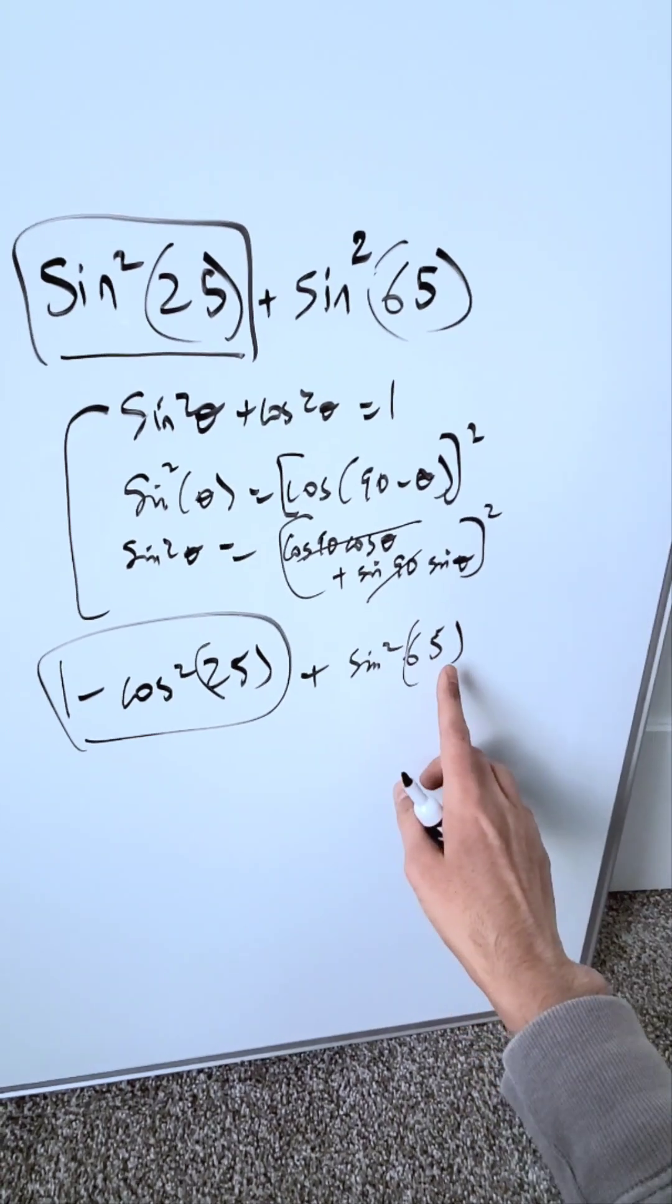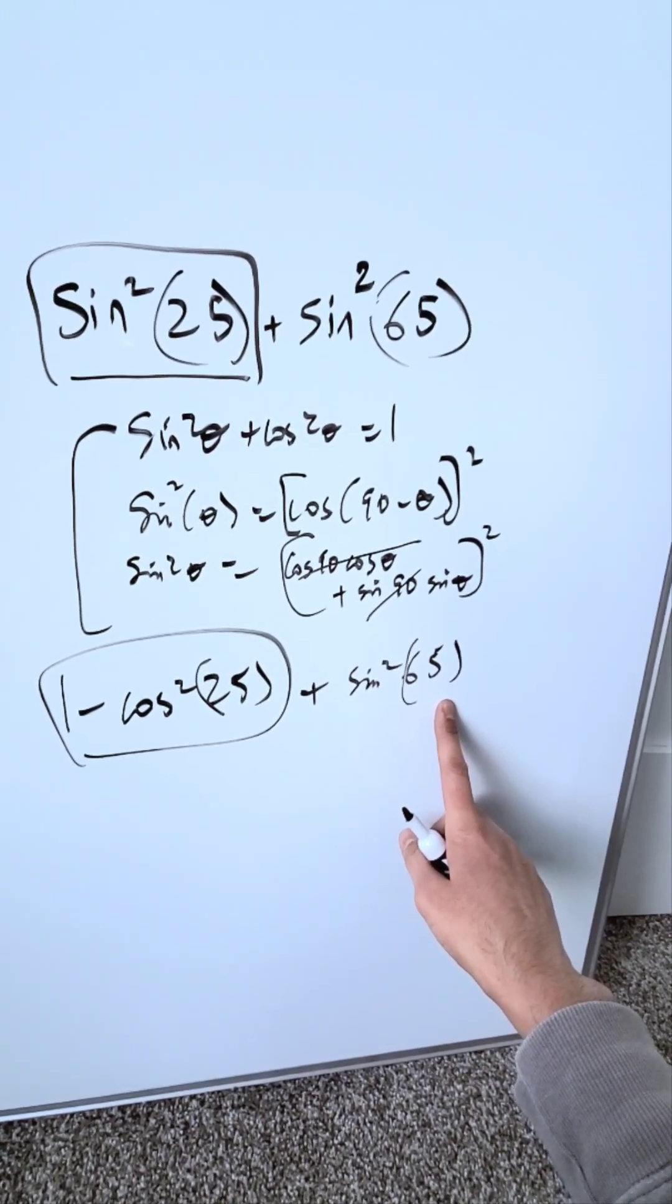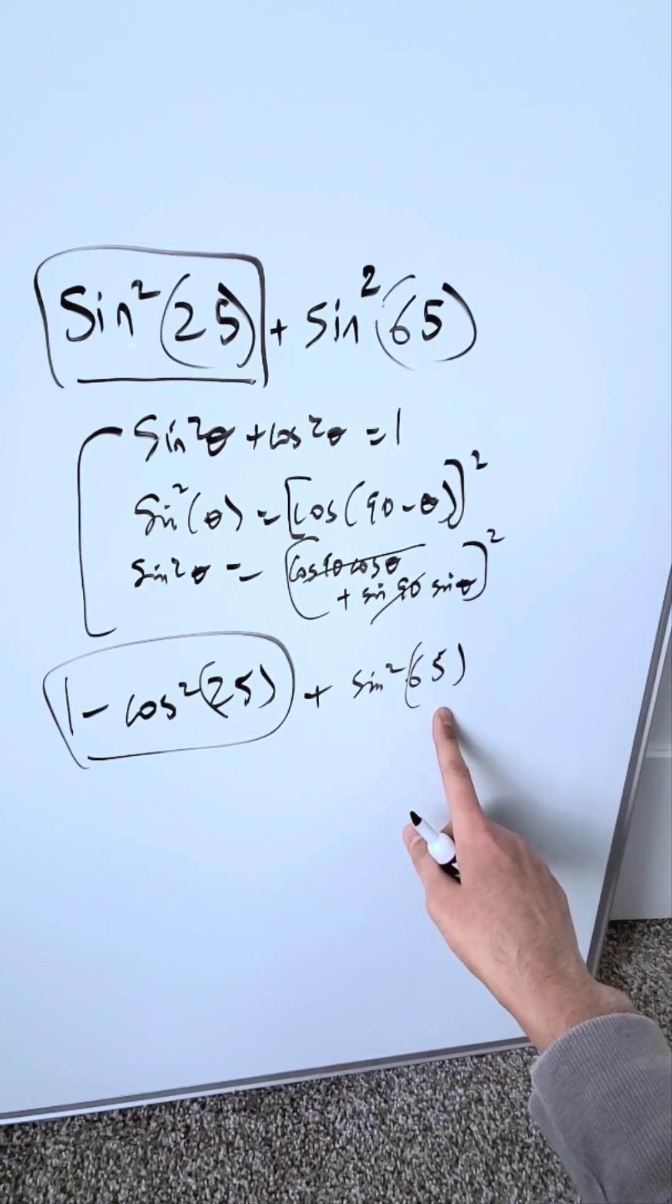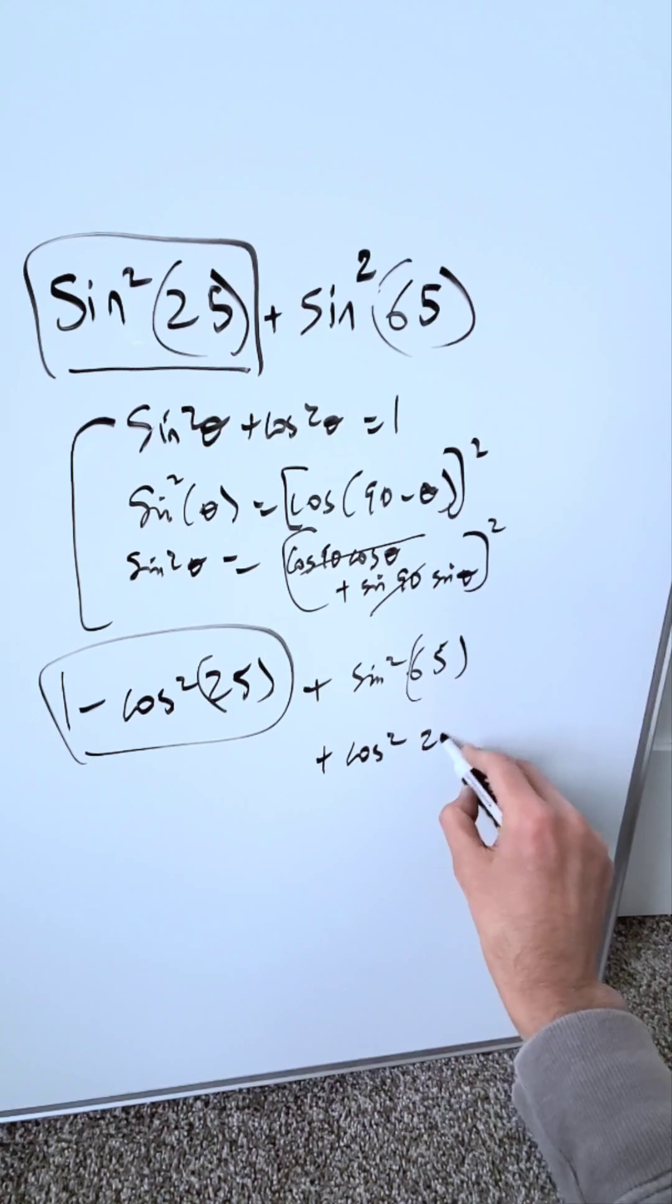Think of your co-function identity. Sine squared 65 is no different than cosine squared of its complement. What would its complement be? 90 minus 65, meaning it would be the same thing as cosine squared of 25.